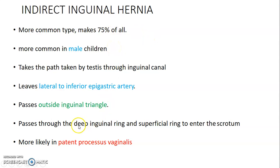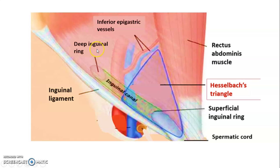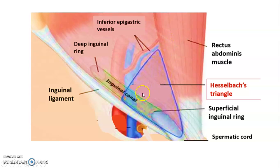Indirect inguinal hernia is mainly in male children due to the patent processus vaginalis failing to obliterate. This occurs lateral to the inferior epigastric vessel. The processus vaginalis is a peritoneal membrane, so it carries with it the abdominal viscera through the deep inguinal ring into the inguinal canal and out. The indirect hernia occurs through the deep ring, through the canal, to the superficial ring, while the direct occurs only through the canal and the superficial ring. Direct occurs medial to the inferior epigastric vessel within Hesselbach's triangle; indirect occurs lateral to it.